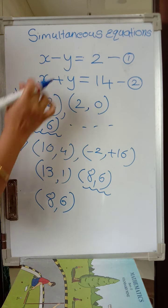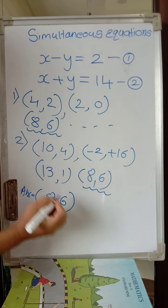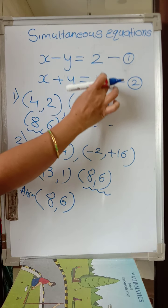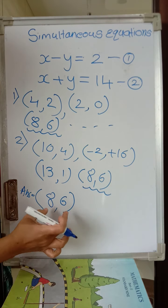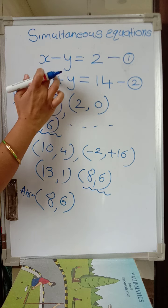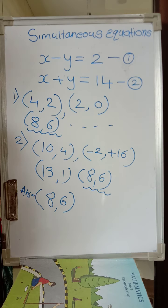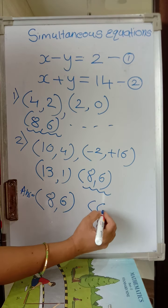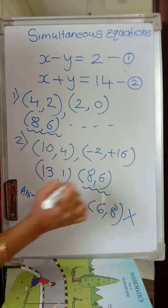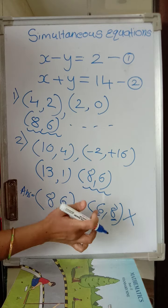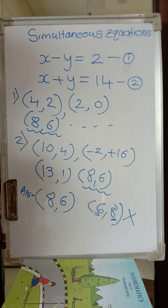So after solving simultaneous equations you write the answer as 8 comma 6. The solution means: if we put these values in both equations, we get left hand side equal to right hand side. Note that you cannot write this as 6 comma 8 — that is completely wrong, because first must be x, then y. If you put 6 for x and 8 for y in equation 1, you get minus 2, not 2.